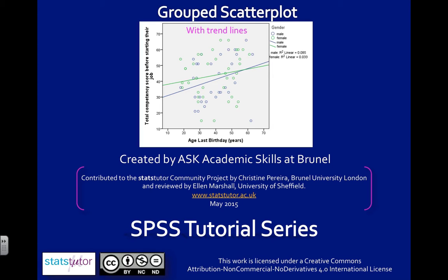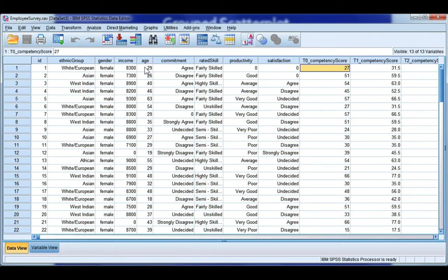I'm also going to show you how to insert a trend line for both of your subgroups. Just as in the other video, I'm going to use age and competency, and this is for employees. So what was their total competency score out of 100 when they started their job? We want to look, is there a relationship between how old someone is and how competent they are when they start their job, and then see if that relationship is different for males and females.